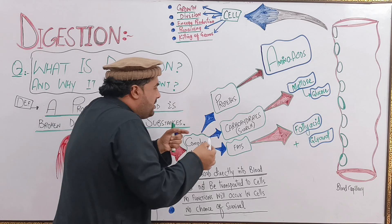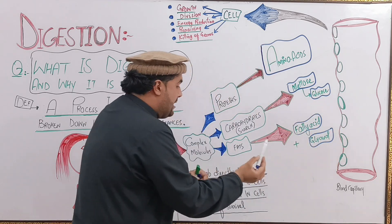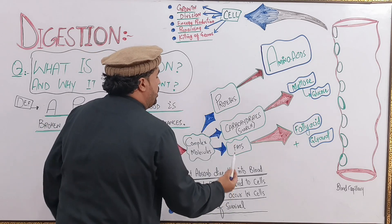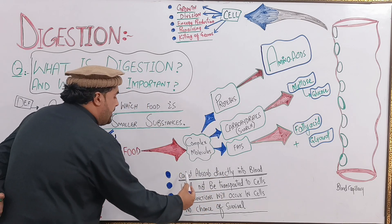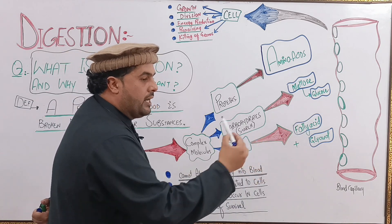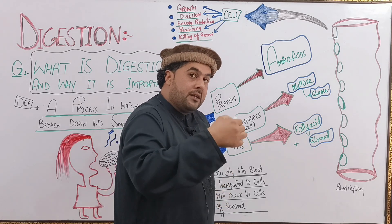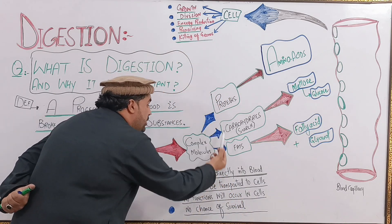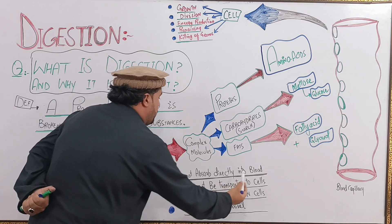Complex molecules — basically the larger ones — cannot pass through capillaries. The pores are too small. We can only absorb smaller molecules directly into the blood. Blood absorption occurs, and nutrients are transported through the blood over time.